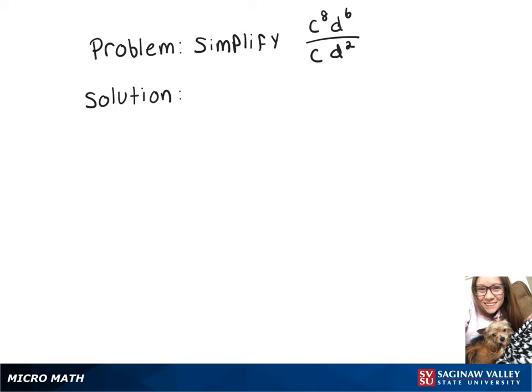To simplify this expression, we need to subtract our exponents. On c, we have 8 and 1, and on d, we have 6 and 2.